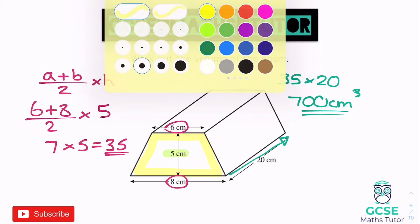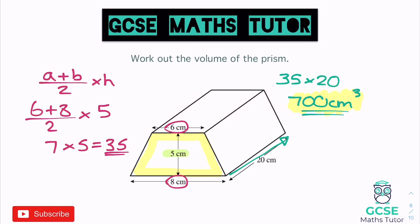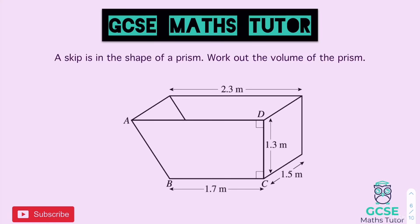There's a lot of similarity between all of these — we work out the area of the cross section and multiply by the depth. We've had rectangles and squares, triangles, and now trapeziums. For your practice question, a skip is in the shape of a prism with a trapezium cross section — indicated by the right angles showing the two parallel sides. There are decimals involved so a calculator is recommended. Pause the video, have a go.